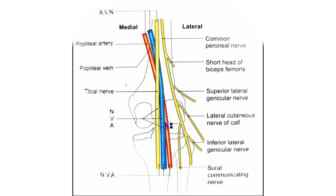In the middle part, from behind to forwards, there is the nerve, the vein and the artery. Similarly in the lower part, from medial to lateral side, there is the nerve, the vein and the artery. The common peroneal nerve crosses the fossa obliquely from the superior angle to the lateral angle along the medial border of the biceps femoris muscle.